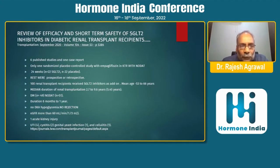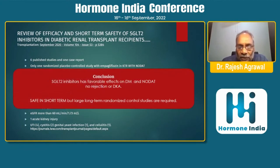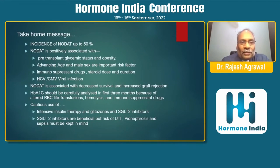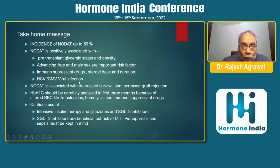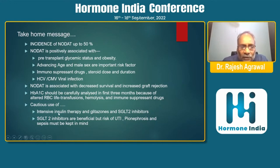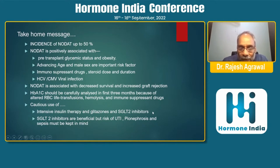Take-home messages: the incidence of NODAT is up to 50%, positively associated with pre-transplant glycemic status and obesity. Advancing age and male sex are important factors for both recipients and donors. Immunosuppressant drugs, steroid dose and duration, hepatitis C virus, and cytomegalovirus all contribute to the incidence of NODAT. NODAT is associated with decreased survival and increased graft rejection. HbA1c should be judiciously analyzed in the first three months, and caution should be exercised with intensive insulin therapy, glitazones, and SGLT2 inhibitors because of the risk of pyonephrosis and sepsis.